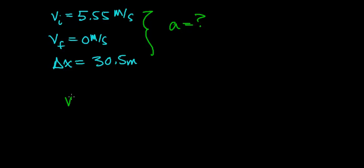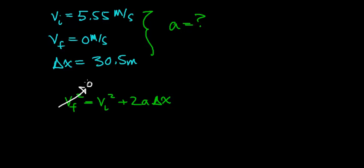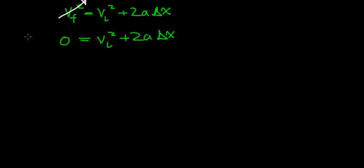One of our kinematic equations says that the final velocity squared is going to equal the initial velocity squared plus 2 times the acceleration times the change in distance — the distance over which the object is going to be slowing down. Our final velocity is 0, so we can eliminate that term, giving us: 0 equals the initial velocity squared plus 2 times the acceleration times the change in distance.